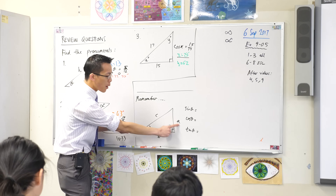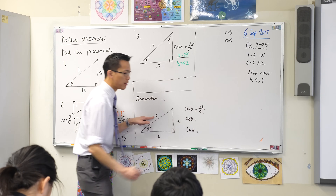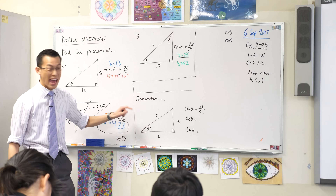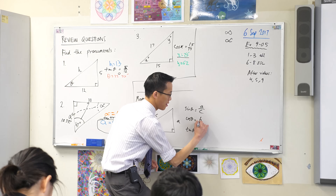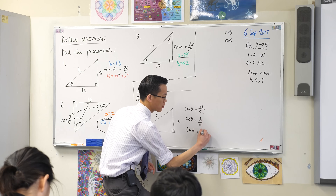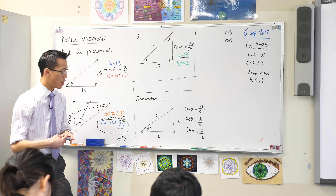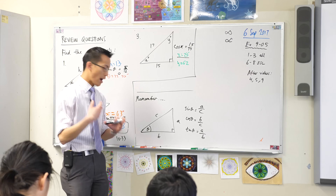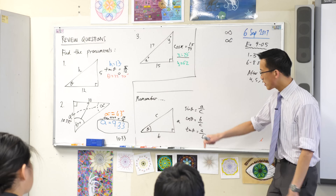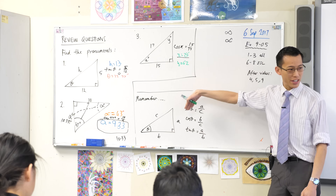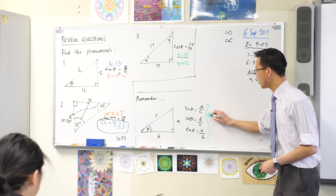Sine theta is A over C — opposite on hypotenuse, very good. Likewise, cos theta will be B over C, and then tan is opposite on adjacent. Now, in other words — and this is worth writing down — we think of these trigonometric objects as ratios.